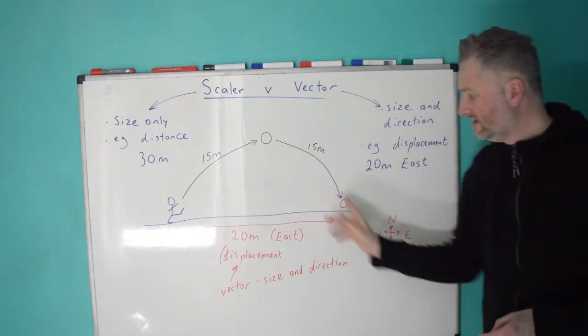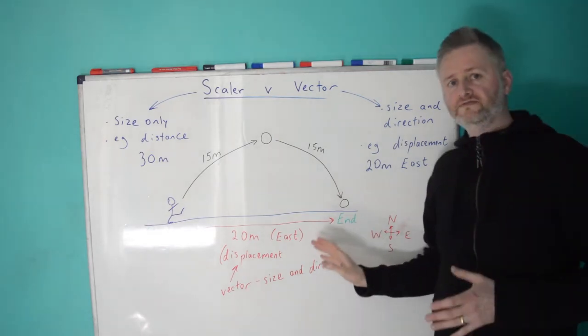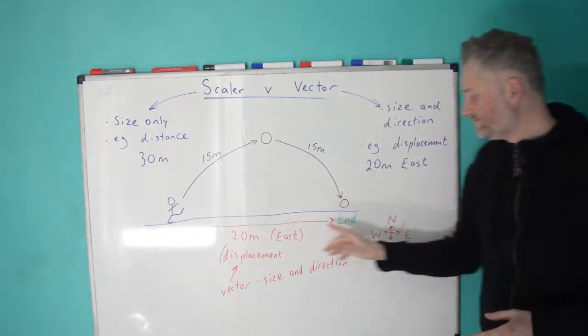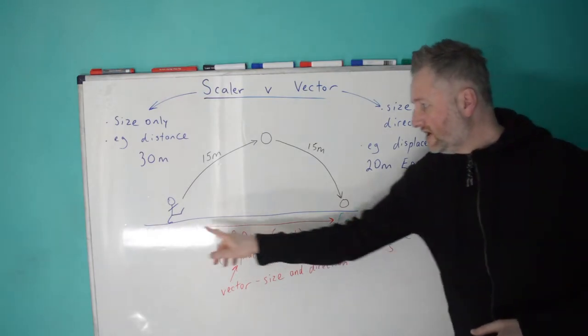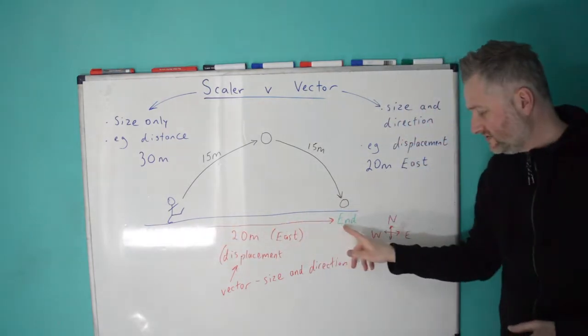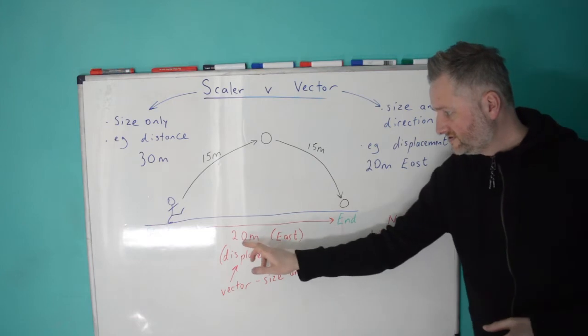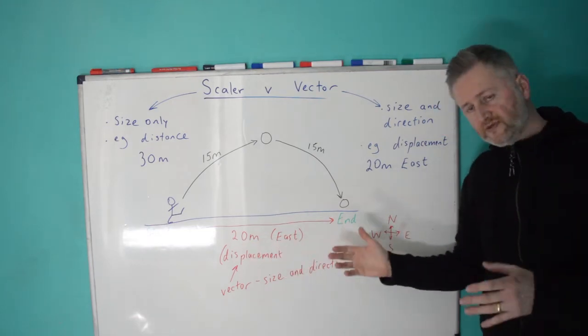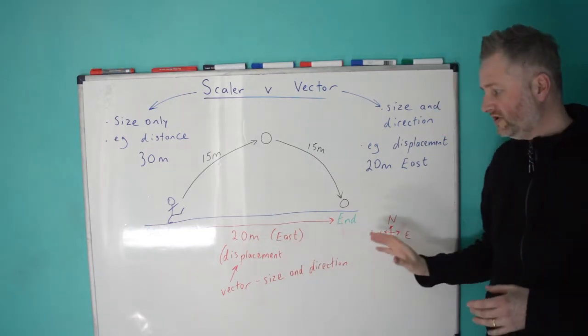So, if we take the same journey, what we're interested in for a vector is, where did it start? Where did it end? How far did it travel then? So, what's the size involved? So, it's 20. Remember the units, metres.